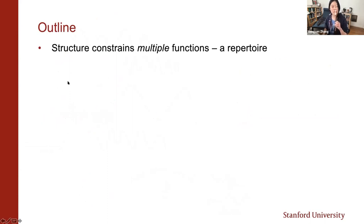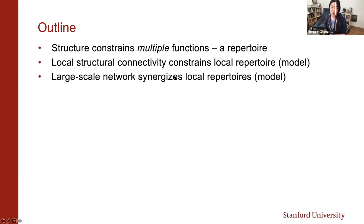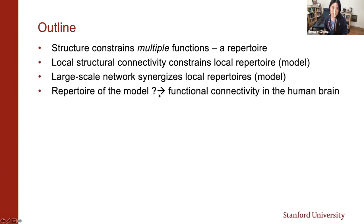I will give you a conceptual overview of what I mean by constraint. The structure not only constrains a single function, but a repertoire of multiple functions. I will focus on dynamics as a repertoire, then use a model to show how the dynamic repertoire of a single brain region can be controlled by its local connectivity, and how a large-scale network can synergize their dynamic repertoire. Eventually, I will connect this to data — specifically, what features of the dynamic repertoire reflect functional connectivity patterns observed in human fMRI.